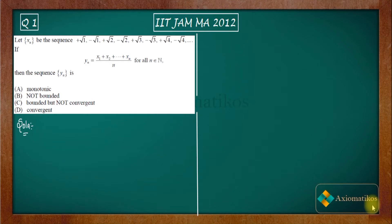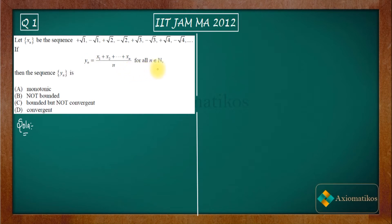Hello dear students, welcome to Axiomatic Course. This video is part of the solution series for IIT JAM 2012. We have an analysis problem totally based on sequences. Let xn be a sequence given to us in explicit form. They define a sequence yn for all n belonging to the natural numbers. The question asks about yn — whether it is monotonic, non-bounded, bounded but not convergent, or convergent.